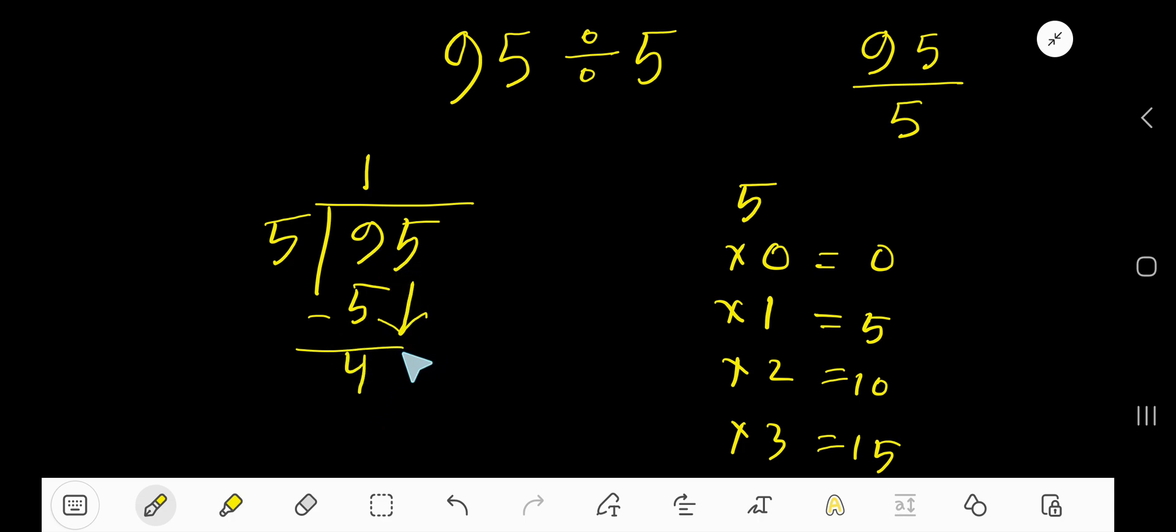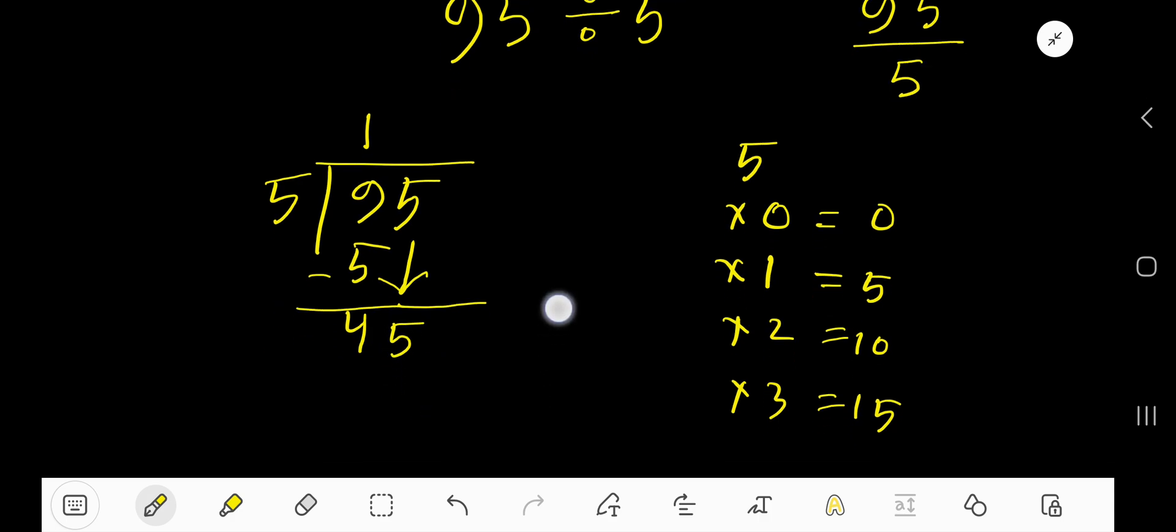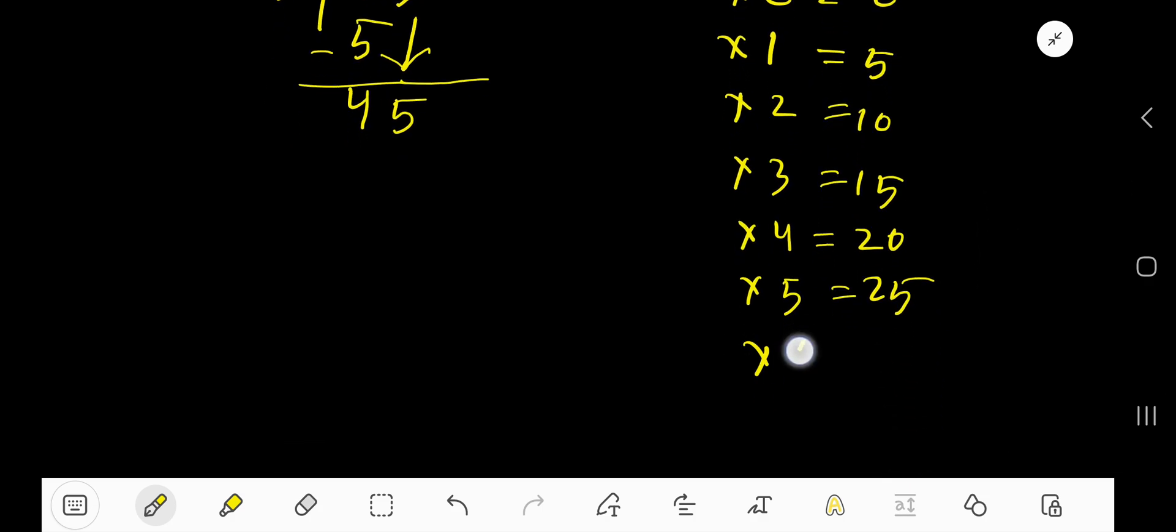Then bring down the next digit, 45. 5 goes into 45 how many times? Let me show you by multiplication table. Just add 5: 20, just add 5: 25, just add 5: 30. Here we have 45, so let's continue.